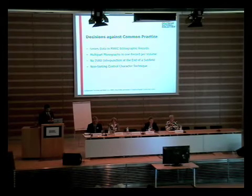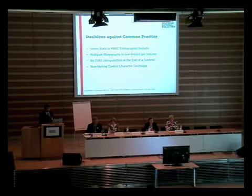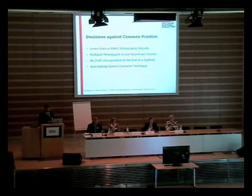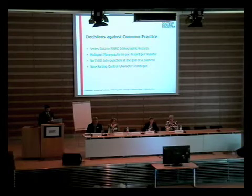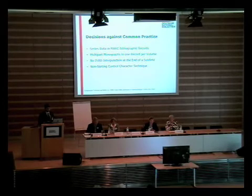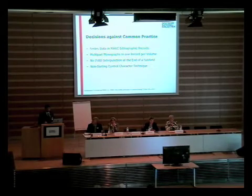We are sometimes asked about specific decisions against common practice. We have series data in MARC bibliographic records — I had to learn that in the Anglo-American context they are treated as authority records. We have multipart monographs with one record per volume, so we generally won't need the 505 field. We will not use ISBD punctuation at the end of subfields. The only fields where we use it are 240X or 245 to get distinctions in 245 subfield B. And we will use the non-sorting control character technique rather than counting positions and writing the value into an indicator.